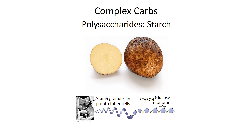An example of a complex carbohydrate is starch — remember, we also call that a polysaccharide. Poly means many, saccharide means sugar. Starch is made up of many glucose monomers all linked together, and remember, it's the condensation reaction which is linking those glucose building blocks together.